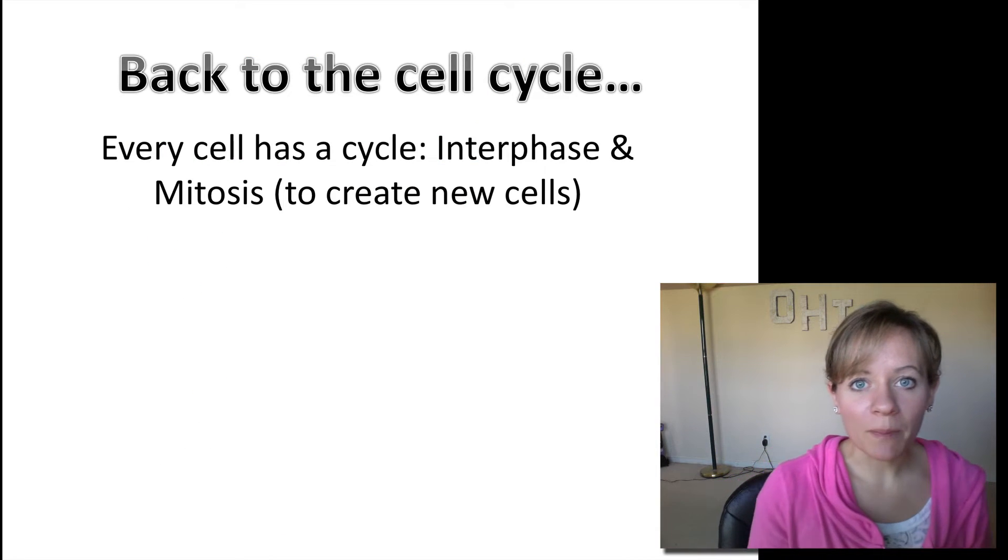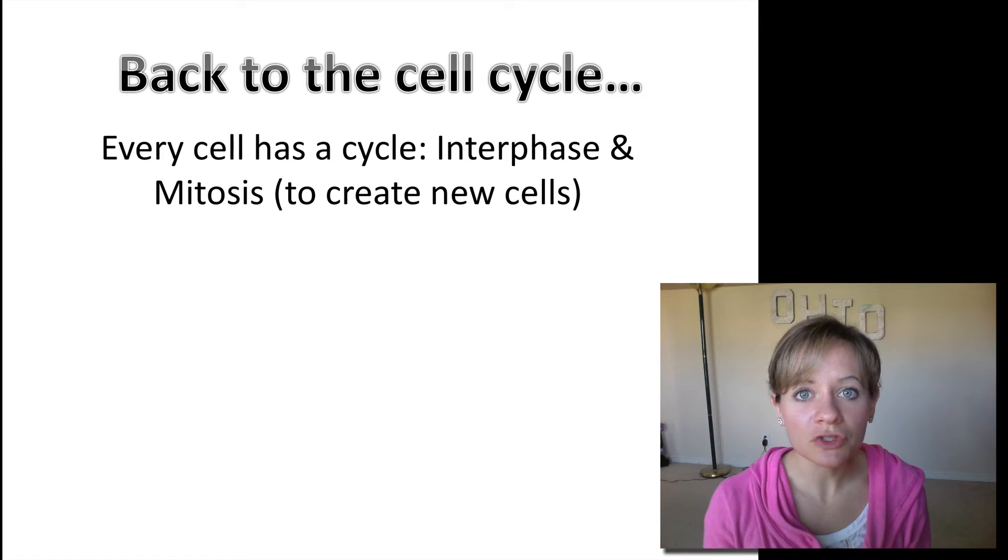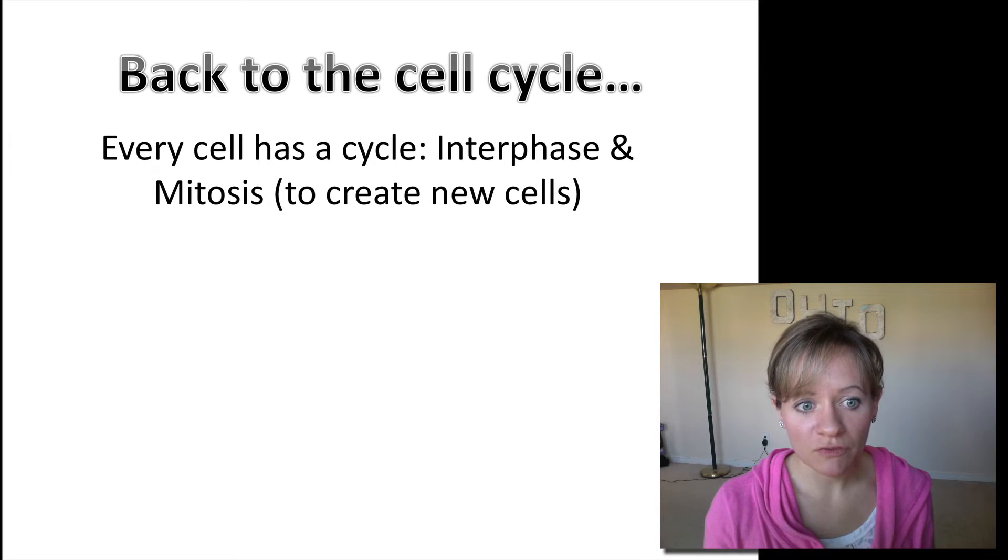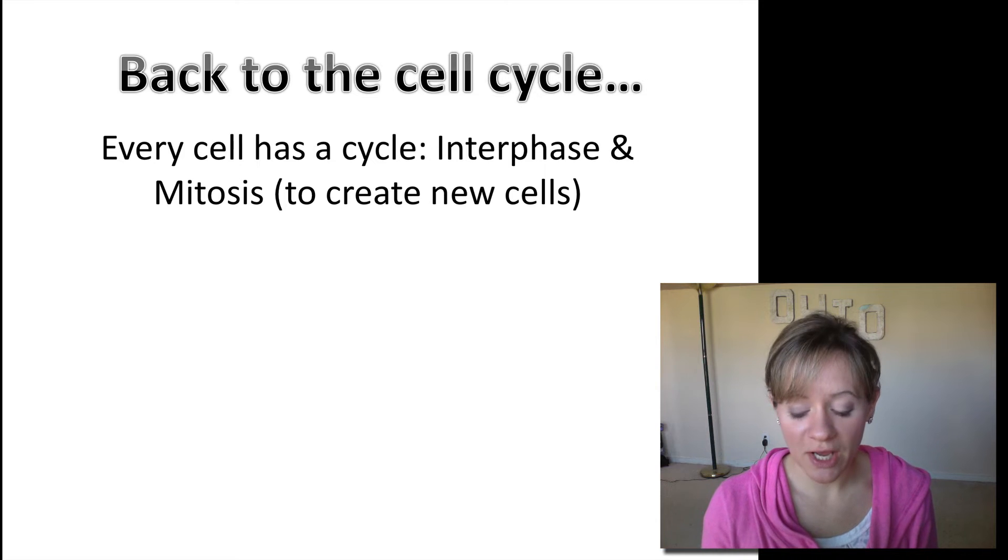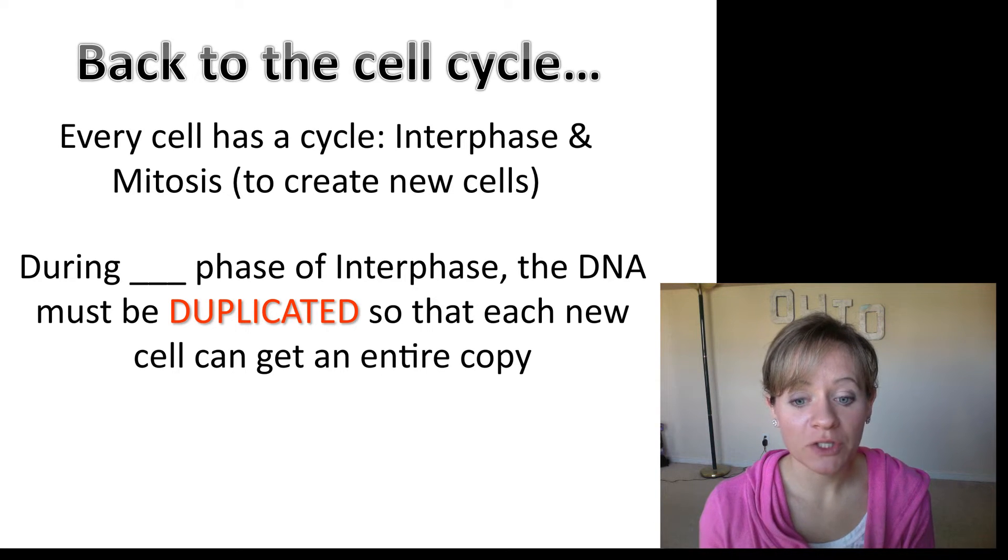Now I want to jump back to earlier in the year when we talked about the cell cycle. Remember that every cell has a cycle: interphase and mitosis, which is when the cells actually divide to create new cells. Remember we said that during a specific part of interphase, the DNA had to be duplicated, so that each new cell that forms from mitosis could get an entire copy of that genome, of that DNA.